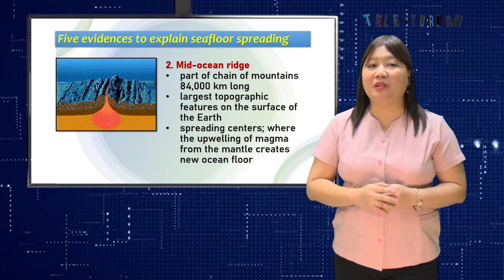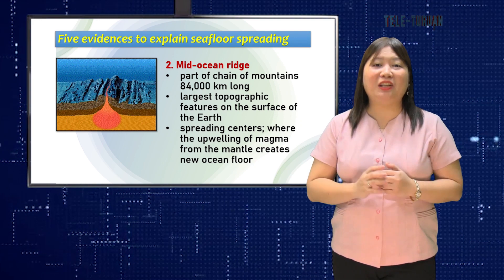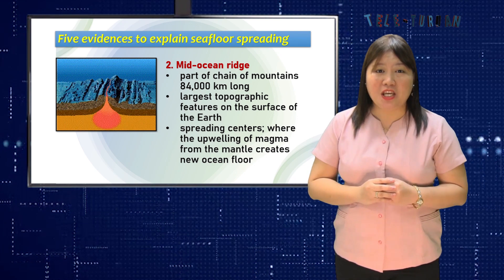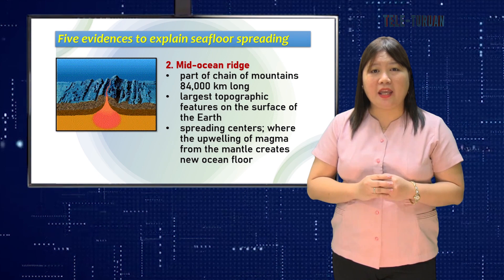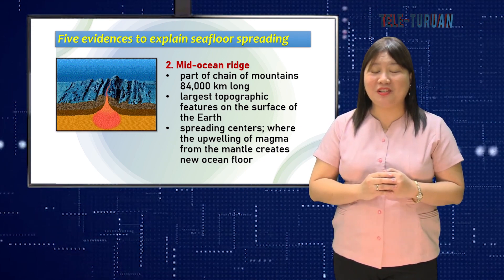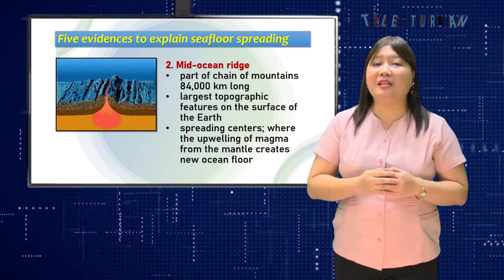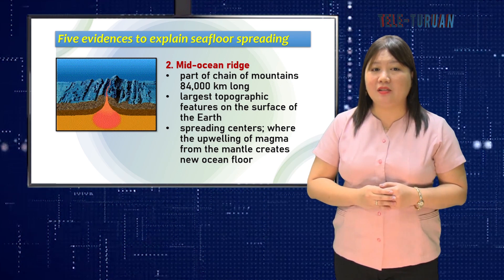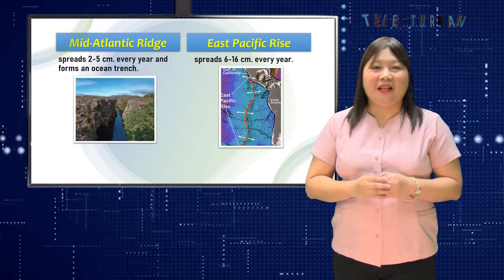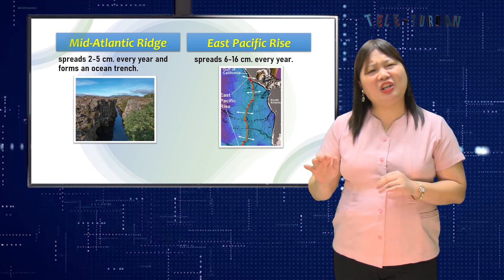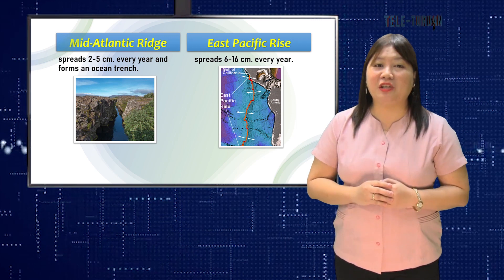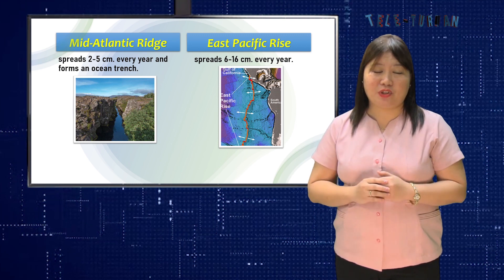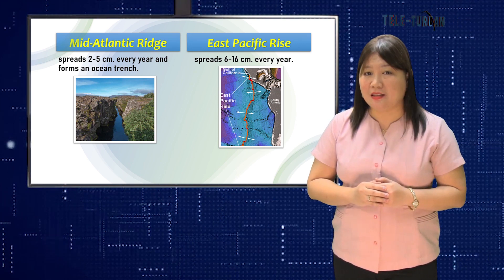Second is the mid-ocean ridge. Remember that the mid-Atlantic ridge is the longest mountain chain on Earth? Mid-ocean ridges are parts of a chain of mountains some 84,000 kilometers long and are the largest topographic features on the surface of the Earth. These ridges are spreading centers or divergent plate boundaries where the upwelling of magma from the mantle creates new ocean floor. The mid-Atlantic ridge is a slow spreading center — it spreads 2 to 5 centimeters every year — whereas the East Pacific Rise is a fast spreading center, spreading about 6 to 16 centimeters every year.